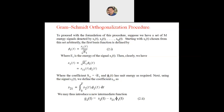Next, using the signal s2(t), we define the coefficient s21 as: s21 = ∫₀ᵀ s2(t) · φ1(t) dt. We may thus introduce a new intermediate function g2(t) = s2(t) − s21 · φ1(t).